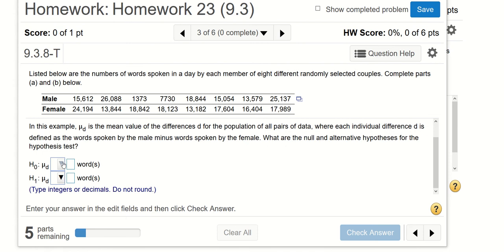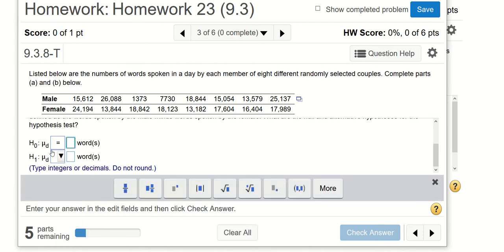So here I will put mu d is equal to 0 will be the null hypothesis. The alternative hypothesis is mu d is less than 0.